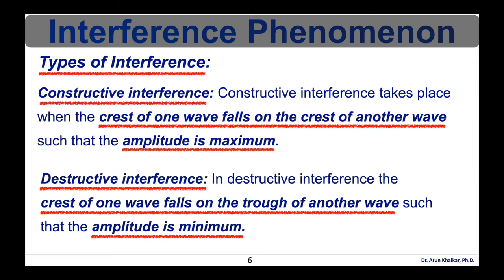In physics, interference is a phenomenon in which two waves superpose to form a resultant wave of greater, lower, or the same amplitude. Constructive and destructive interference result from the interaction of waves that are correlated or coherent with each other, either because they come from the same source or because they have the same or nearly the same frequency. Interference effects can be observed with all types of waves — for example, light waves, radio waves, acoustic waves, surface water waves, gravity waves, or matter waves.